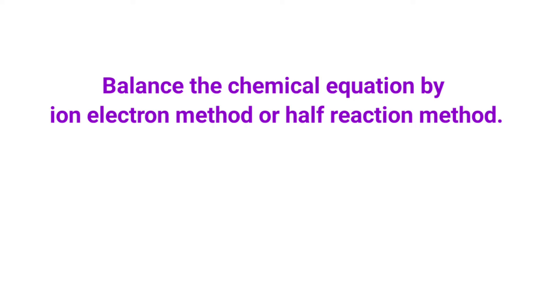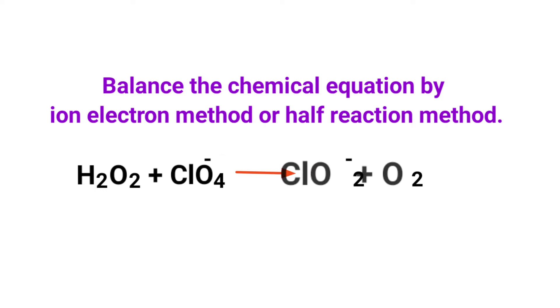Balance the chemical equation by the Ion Electron Method, also known as the Half Reaction Method. The reaction given is: hydrogen peroxide plus perchlorate ion gives chlorite ion plus oxygen.